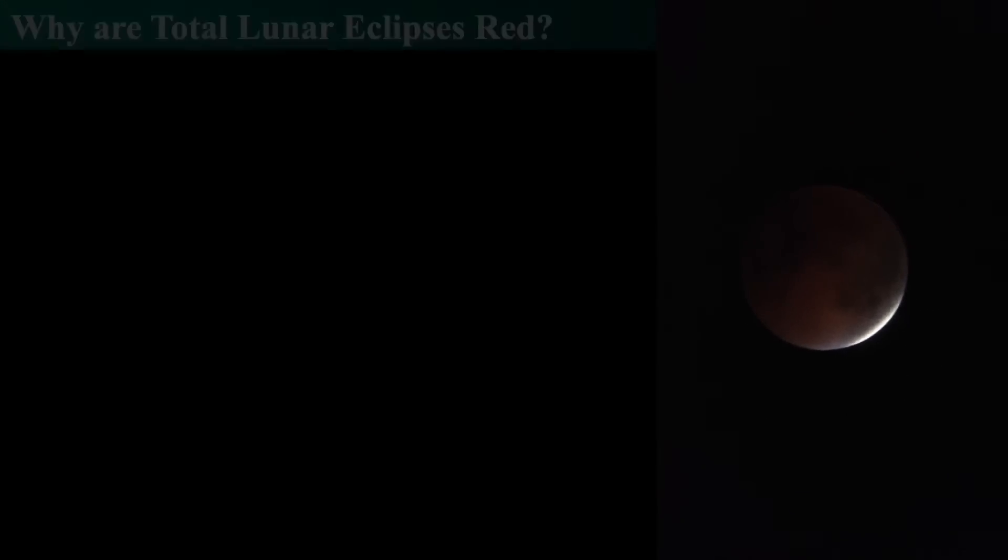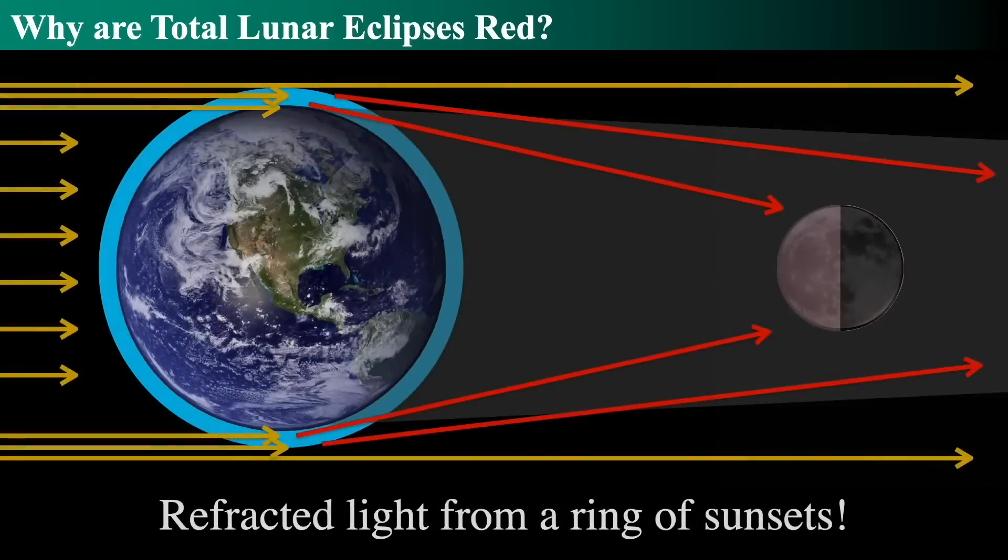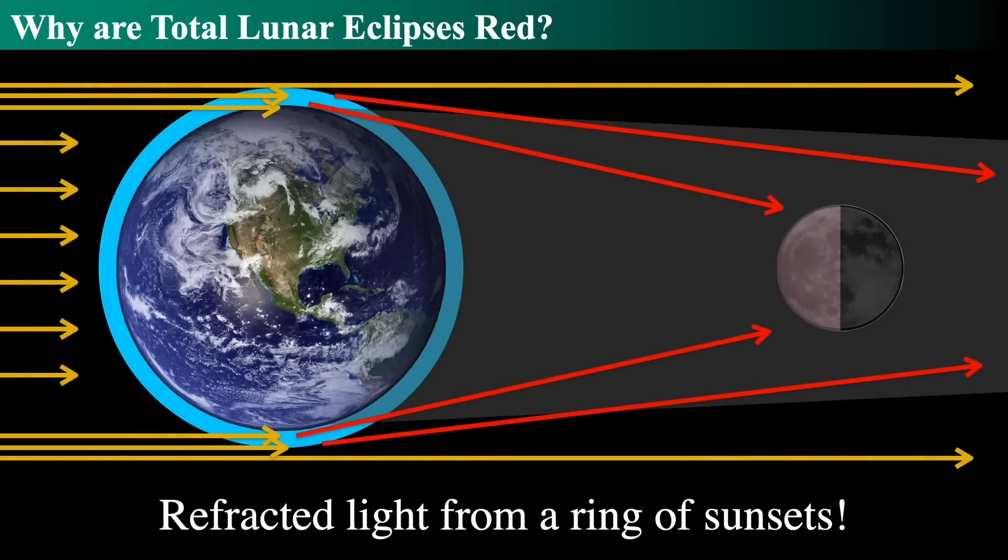It begs the question, why are total lunar eclipses red? Well, total lunar eclipses, when you go out and see them, they look deep, deep red. It's like, why would they look really red? And so the answer is because we're looking at the refracted light from a ring of sunsets.